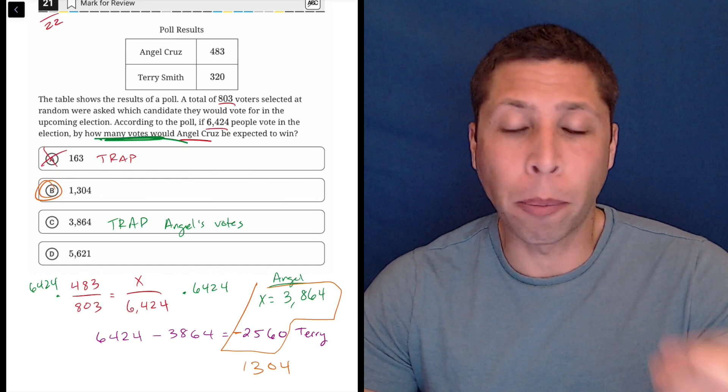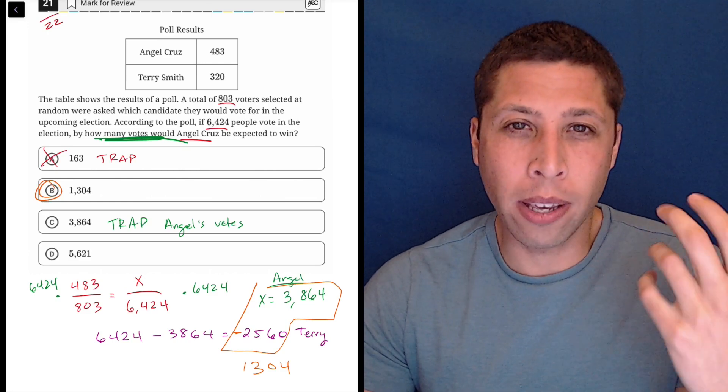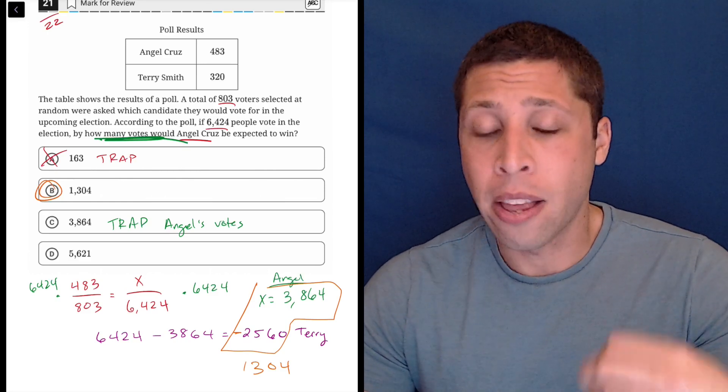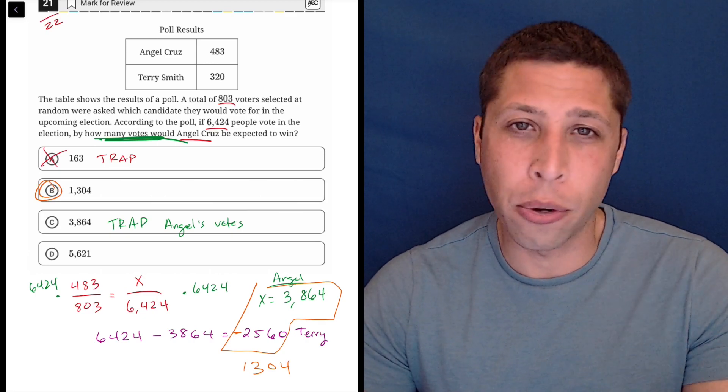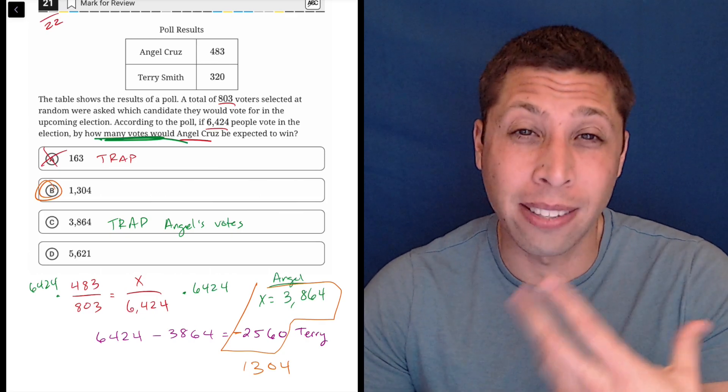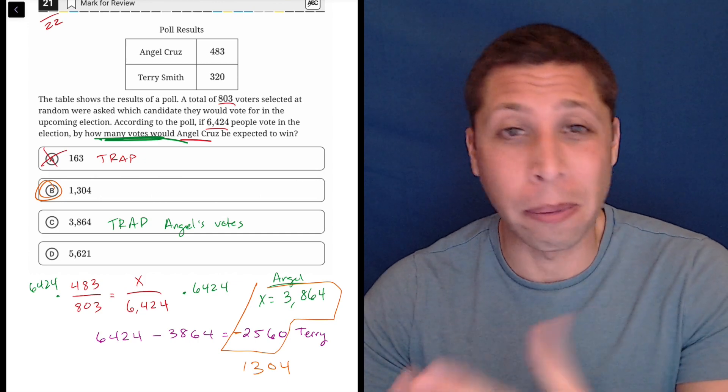But especially when we get to the later part of the test, if you get these answers like choice A that feel too easy, then make sure you just cross them out. Even if you have no idea what to do, at least guess from something else that seems more random to you, it's probably more likely to be right.